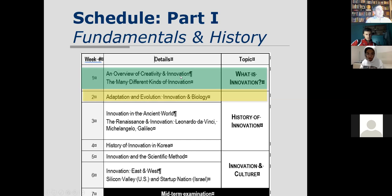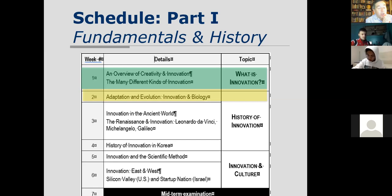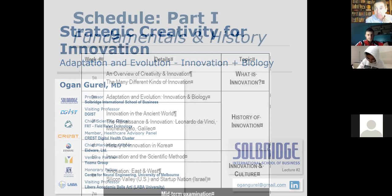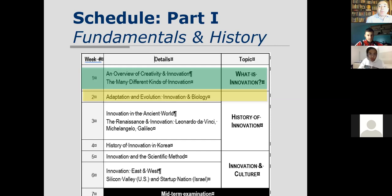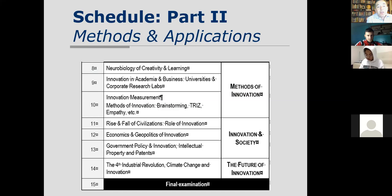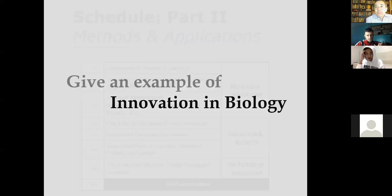Last week we did an overview of creativity and innovation — the many different kinds of innovation — and we learned that innovation is essentially bringing new ideas into some sustainable reality, or combining old ideas in a new way to become reality. This week we're going to talk about examples from biology. The structure of the course: this first half we'll talk about fundamentals and history; the second half will cover actual methods and applications of innovation.